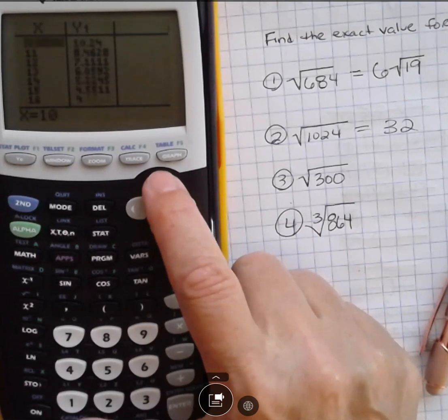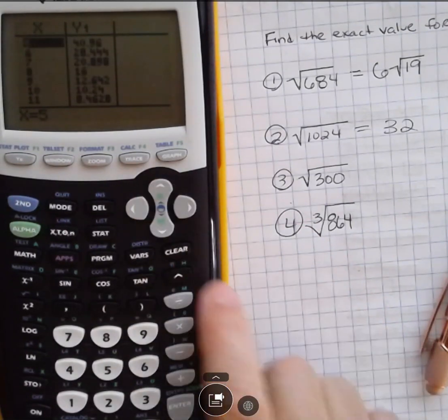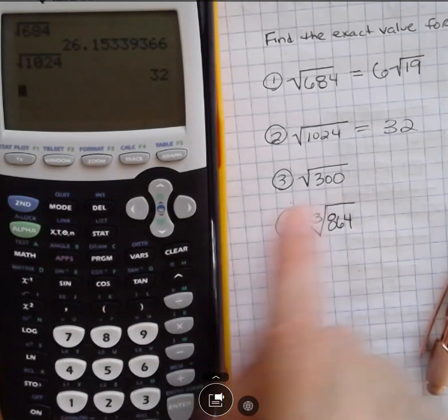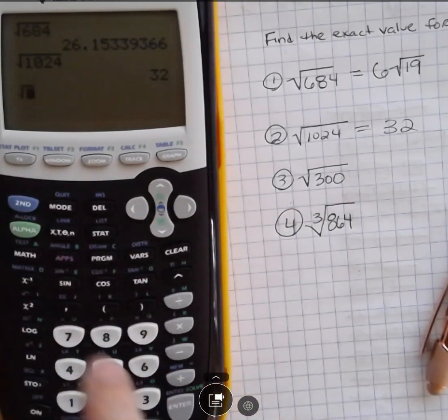You can always go back up. It kind of leaves you off where you started, so I like to clear that out. Okay, second function quit. Square root of 300. Second function, square root 300.